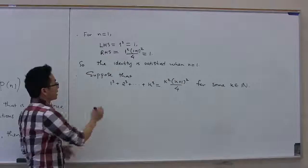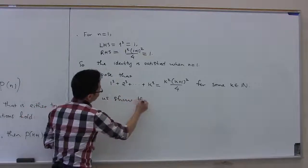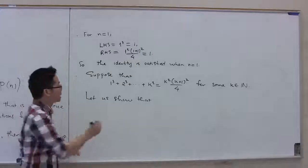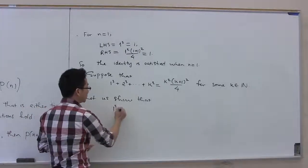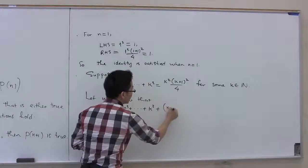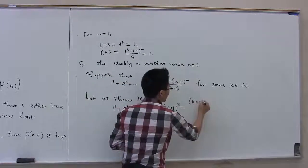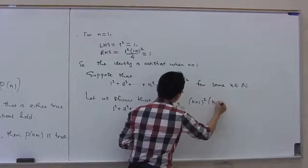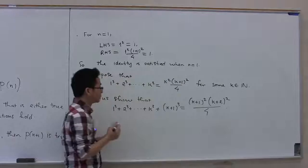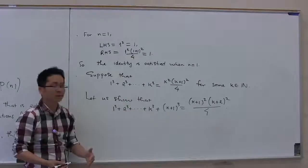Now let us show that the identity is satisfied when n is equal to k plus 1. That is, 1 to the third plus 2 to the third plus so on plus k to the third plus (k+1) to the third is equal to (k+1) squared times (k+1 plus 1) squared over 4 — that means (k+2) squared over 4. We're going to use the inductive hypothesis in order to prove that this is true.